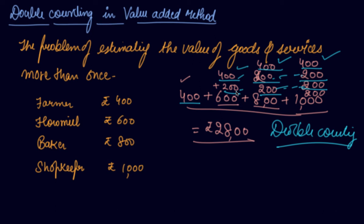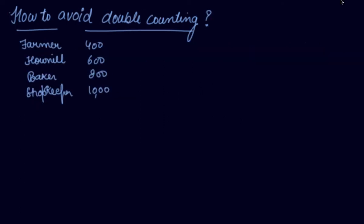So how to avoid this double counting? If we are adding all these, we are counting the value of goods and services more than once. The first method is your final output method.